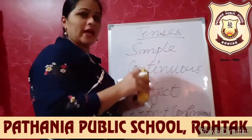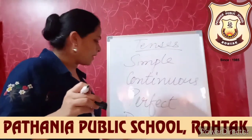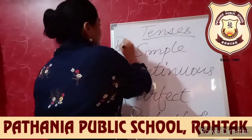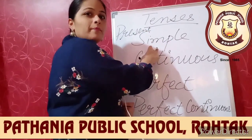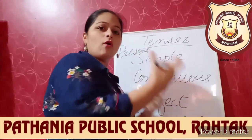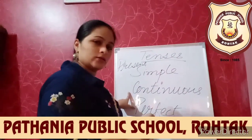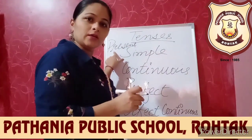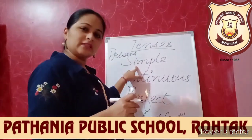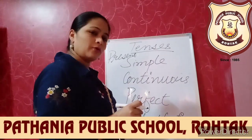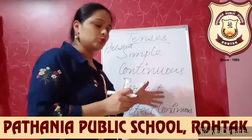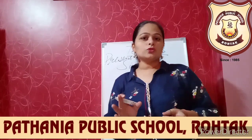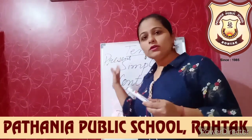In English, when the three times are combined with these four aspects, they form tenses. For example, present time combined with the simple aspect forms present simple tense. In this way we can form all tenses: present simple, present continuous, present perfect, and present perfect continuous. Similarly from past: past simple, past continuous, past perfect, and past perfect continuous. And from future: future simple, future continuous, future perfect, and future perfect continuous. So basically in English there are a total of twelve tenses.